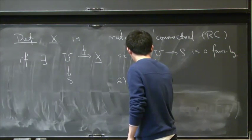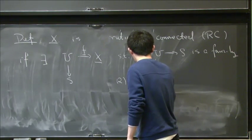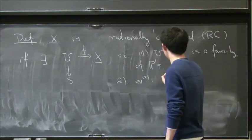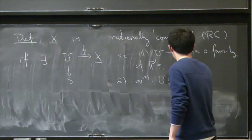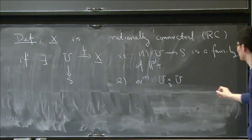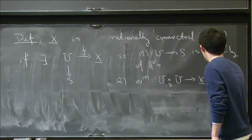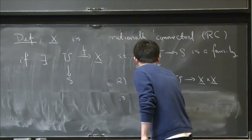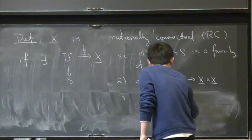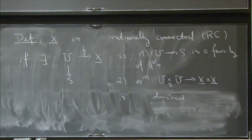So we want the evaluation map from U cross U over S to X cross X. So this is dominant. So this means that a pair of general points on X can be connected by rational curve.